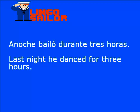Anoche bailó durante tres horas. Hay cinco palabras nuevas: 'anoche' es 'last night', 'bailó' es 'danced'. Para indicar la duración de tiempo utilizamos la preposición 'for'. 'Tres' es 'three', 'horas' es 'hours'. En inglés: Last night he danced for three hours.